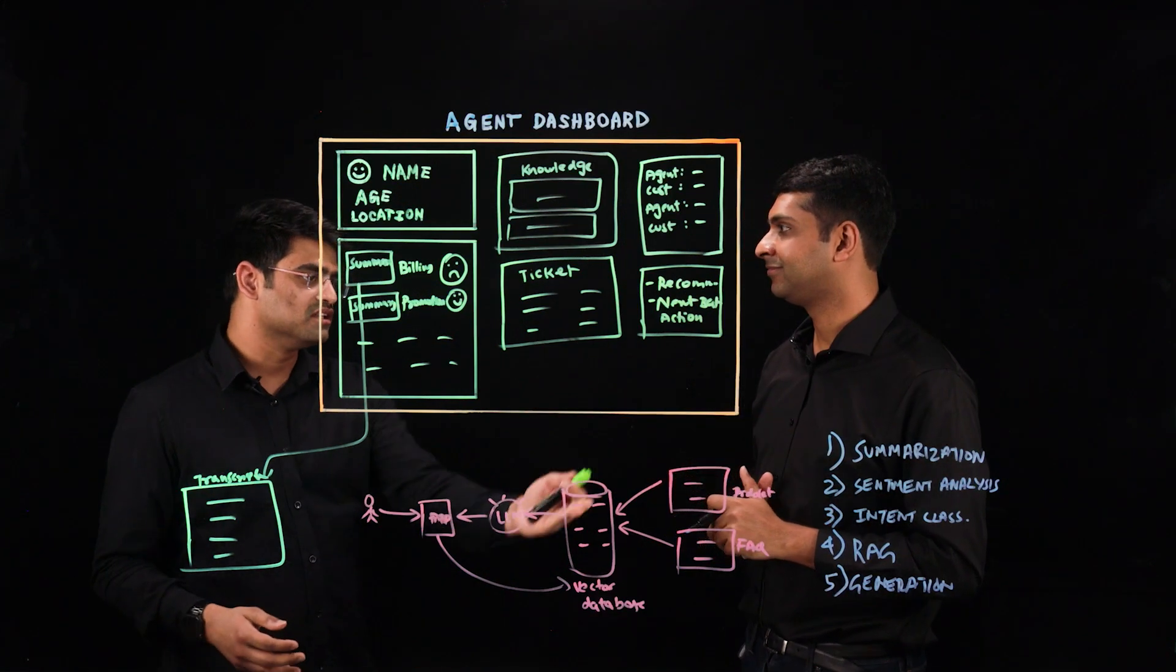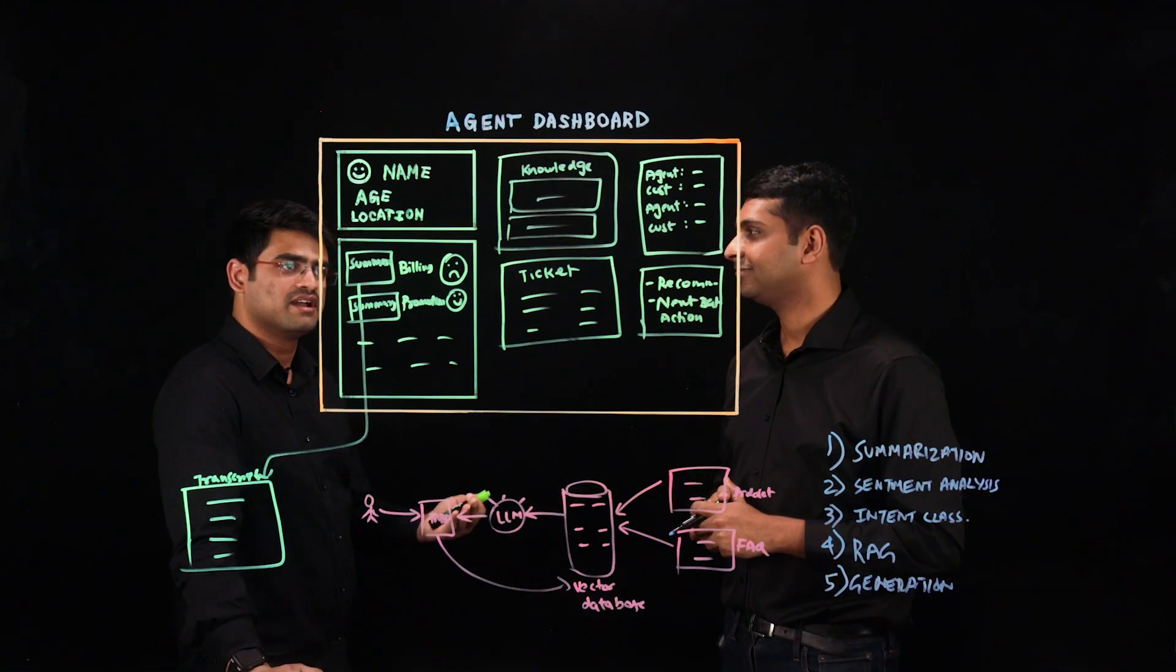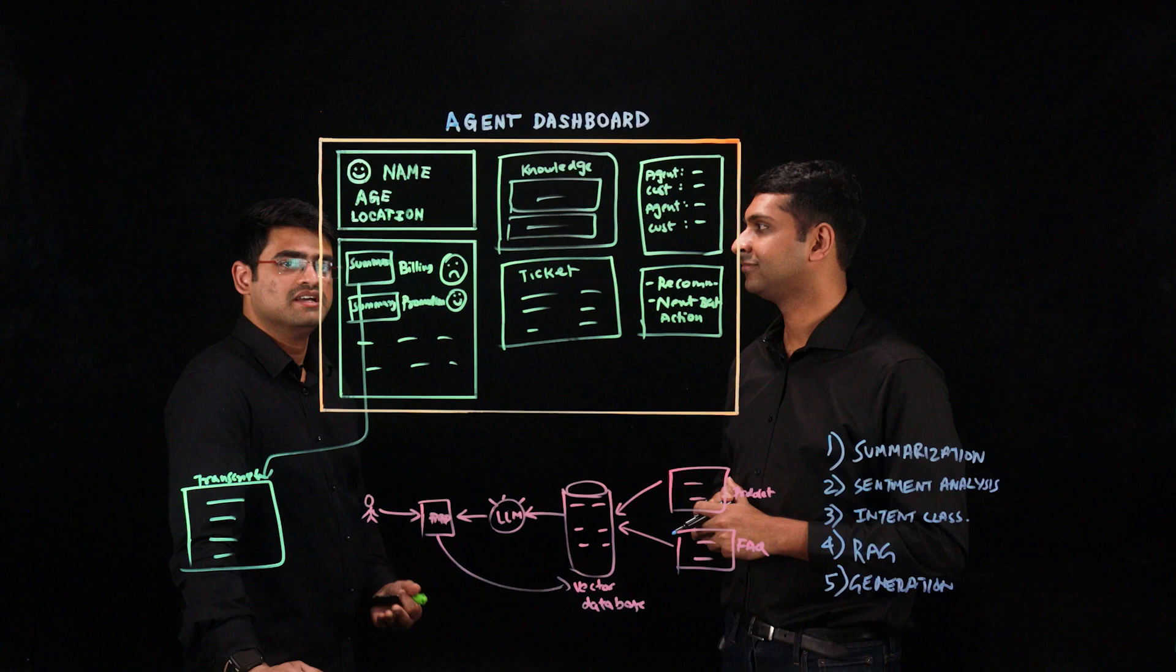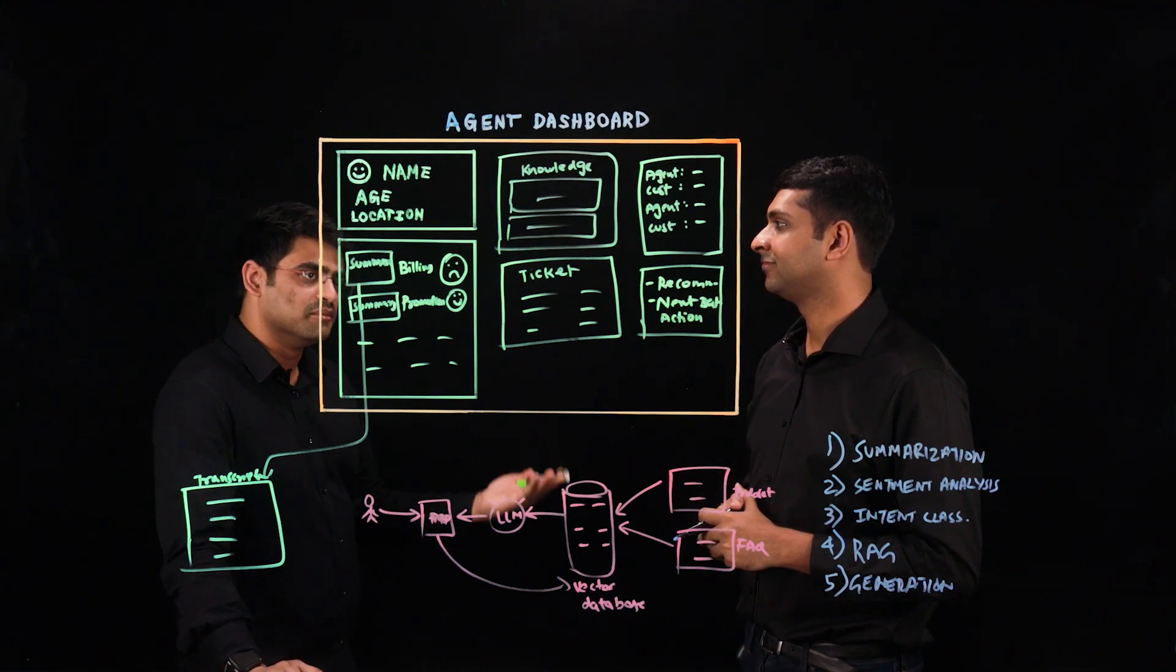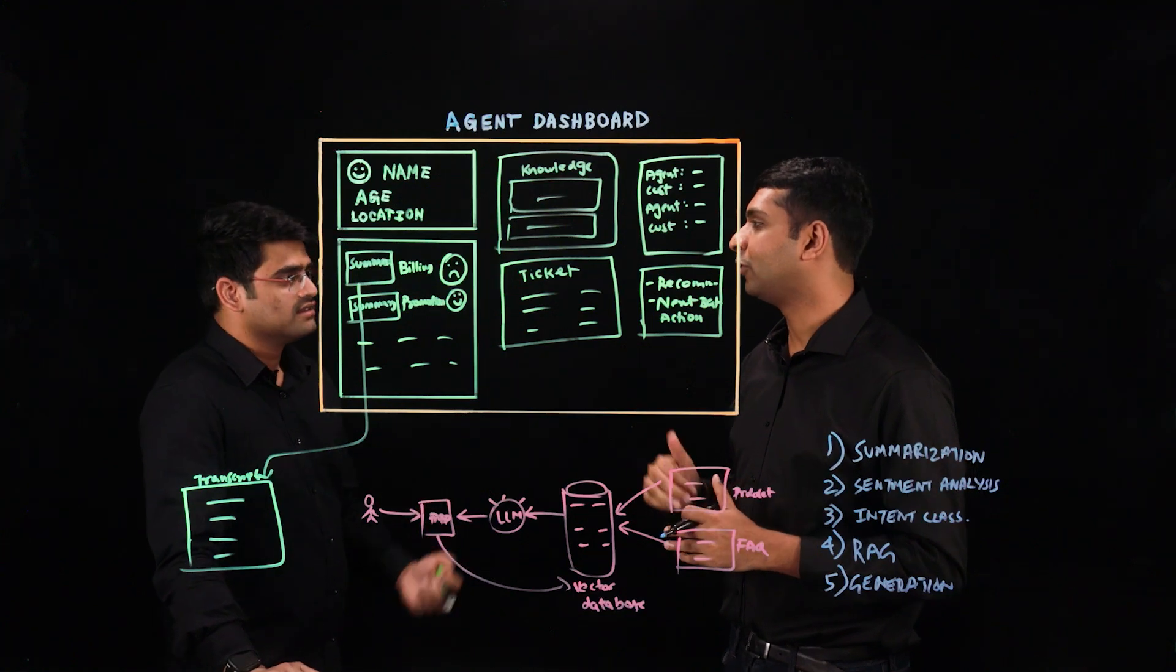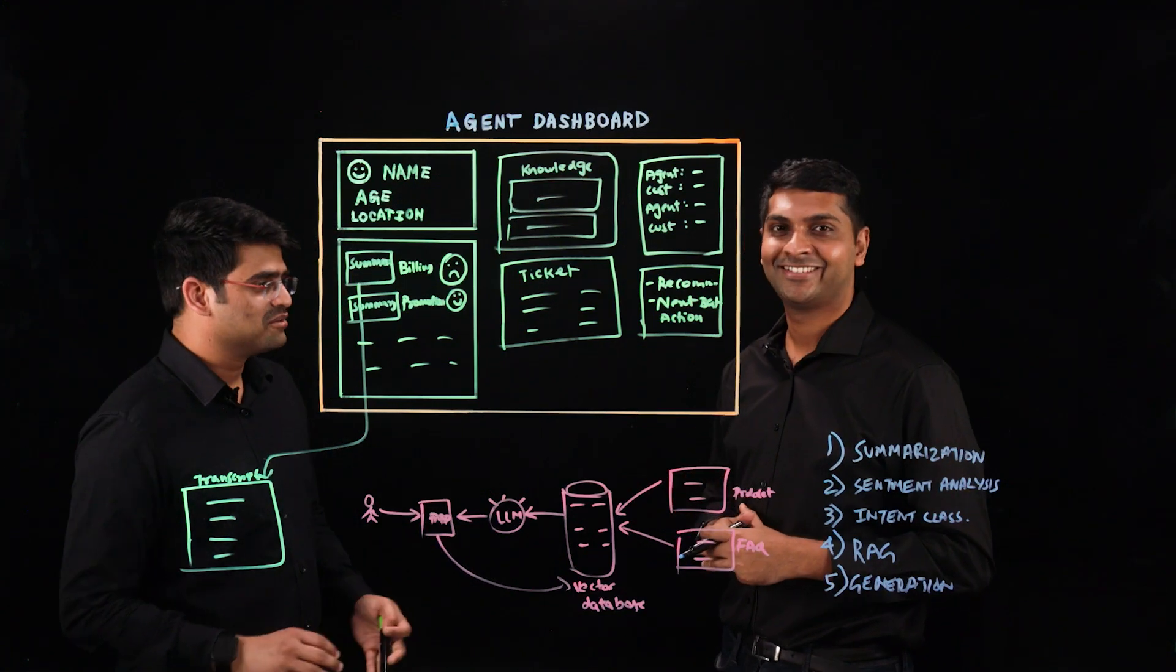Well, there you have it. So with all of these things, summarization, sentiment analysis, intent classification, RAG, and these kind of generation tasks, the agent will now be able to talk to the customer and help the customer in a more productive fashion. Right. So next time you call customer care, hopefully you won't be as frustrated. That'll be really helpful. Thank you.